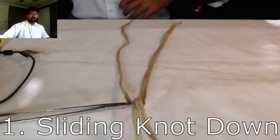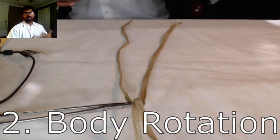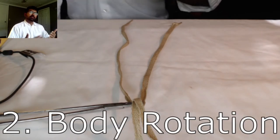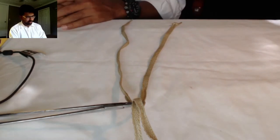The first thing is getting the knot slid down, and the second thing is what you actually have to do with your body when you're putting down your two-handed knots. So let's start with the first thing.